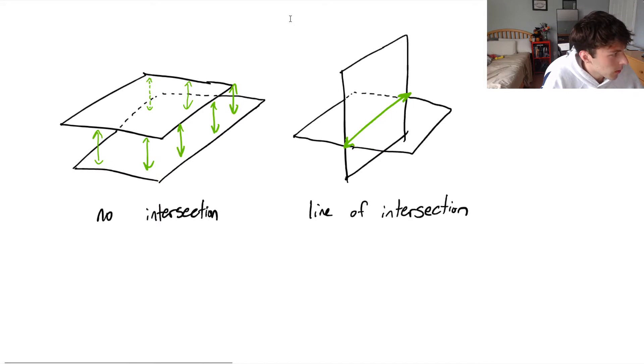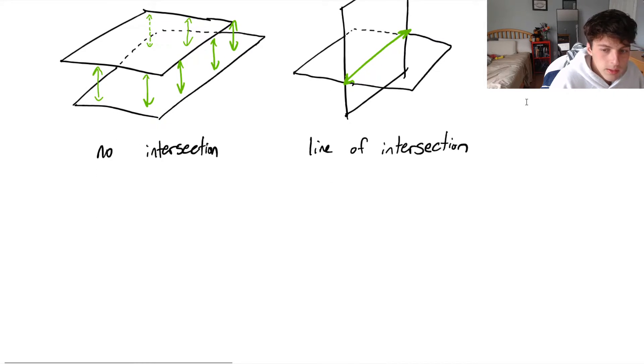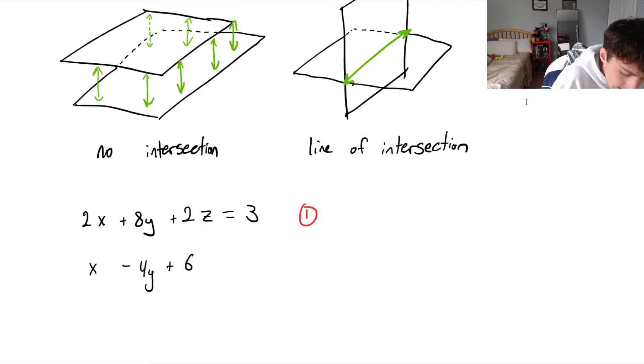Most likely, on a question that's going to be worth a decent amount of marks, there will be some line of intersection just because there's more work that you can do. So let's say that we're given two planes, two scalar equations of planes, and it's given by 2x plus 8y plus 2z equals 3. This is equation number one for one plane. And another, we've got x minus 4y plus 6z equals 3.